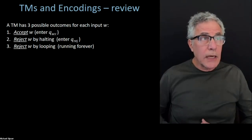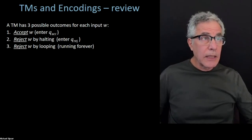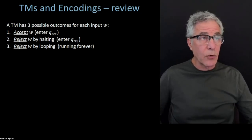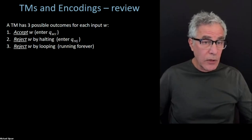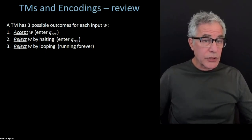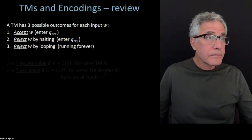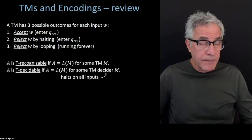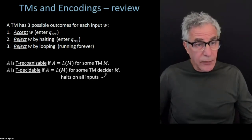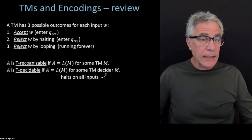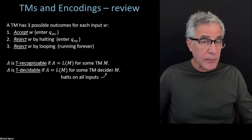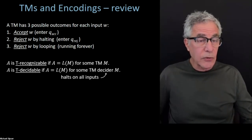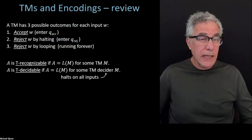As a quick review: Turing machines, as we set them up, on any input W have three possible outcomes. The Turing machine can halt and accept W, can halt and reject W, or it can go forever on W — which is rejecting by looping. A Turing machine can recognize a language, the collection of all strings that it accepts. If the Turing machine always halts, we say it decides the language and it's a decider, and that language is a decidable language or Turing decidable.